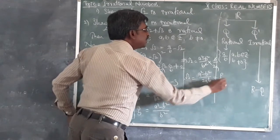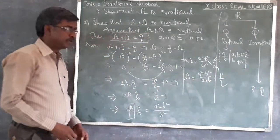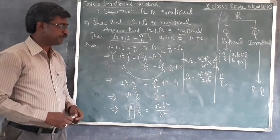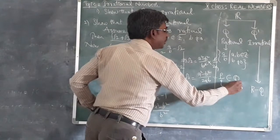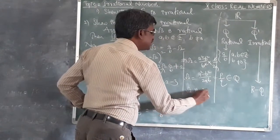Now observe this. It is just like A by B. That means it belongs to rational. Means root 2 is rational.